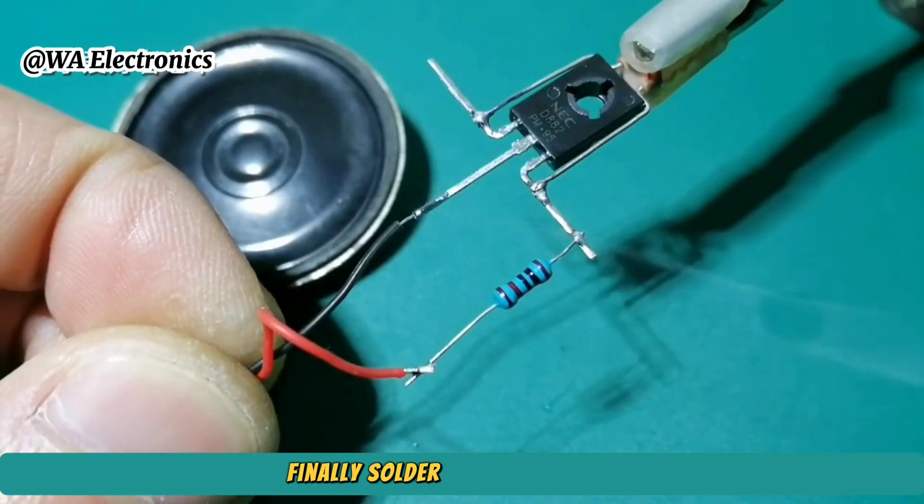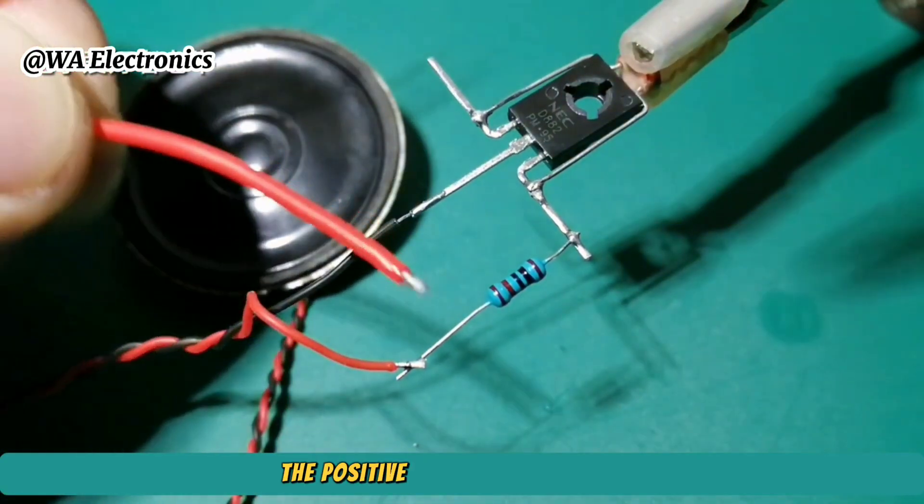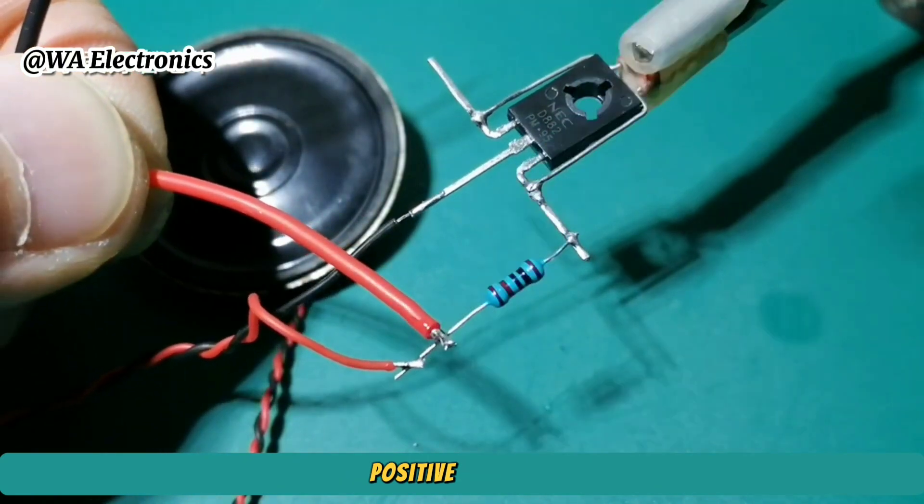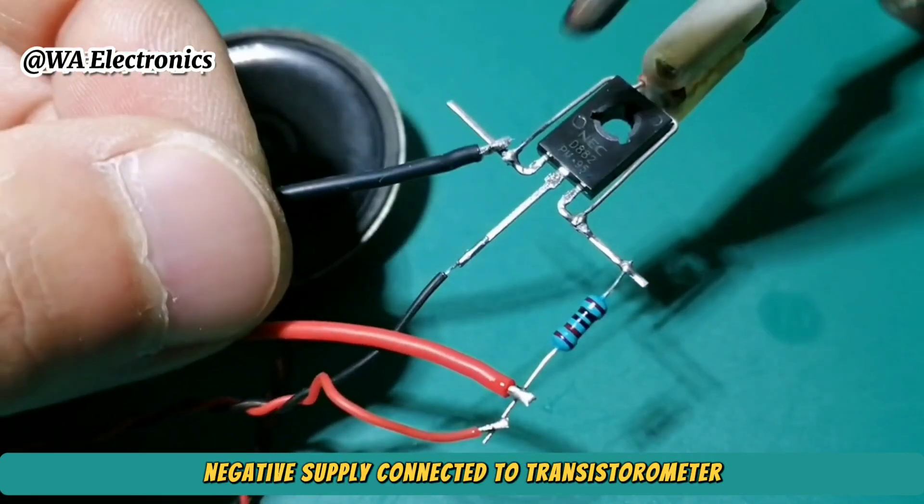Finally, solder a 3.7 volt battery. The positive supply to the speaker positive terminal. Negative supply connected to transistor emitter.